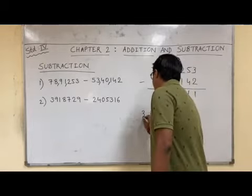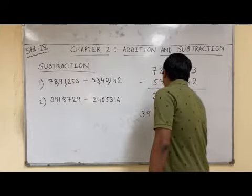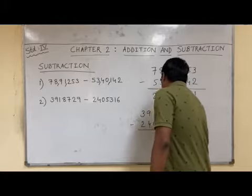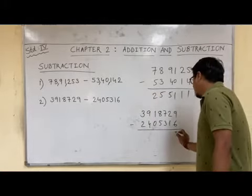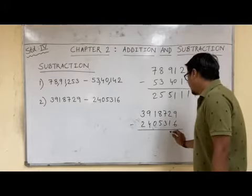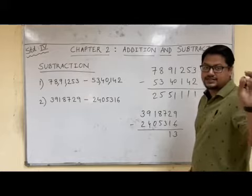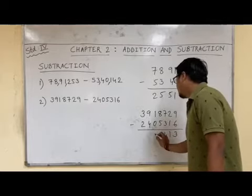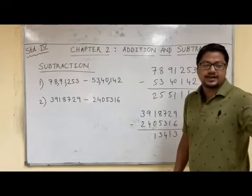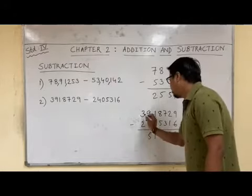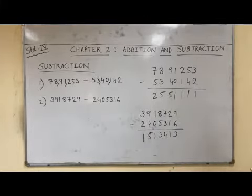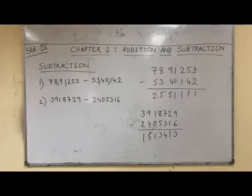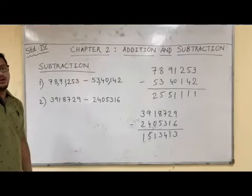Let us write the second question: 3,918,729 minus 2,405,316. 9 minus 6 is 3. 2 minus 1 is 1. 7 minus 3 is 4. 8 minus 5 is 3. 1 minus 0 is 1. 9 minus 4 is 5. And 3 minus 2 is 1. So this was simple subtraction without any borrowing. The rules are all the same, just the numbers are bigger. Now we will see some sums based on subtraction that uses the technique of borrowing.